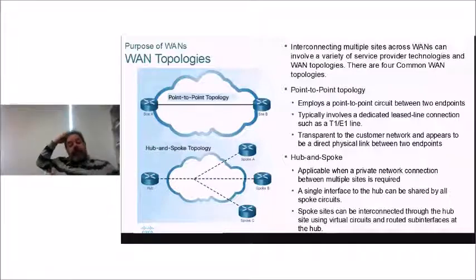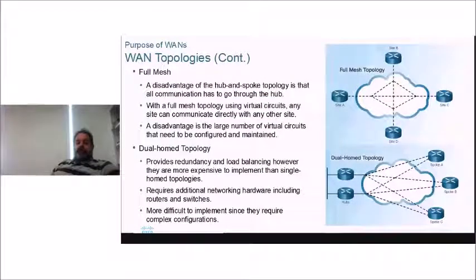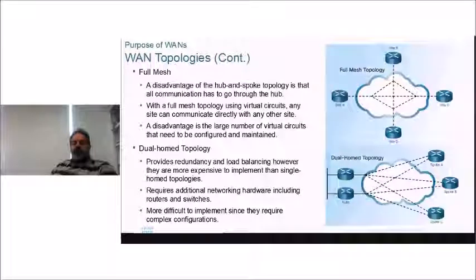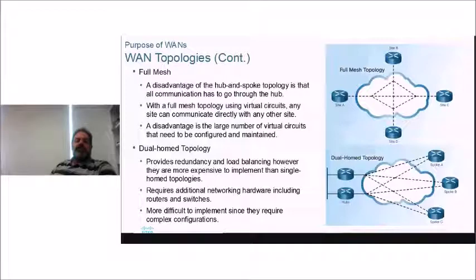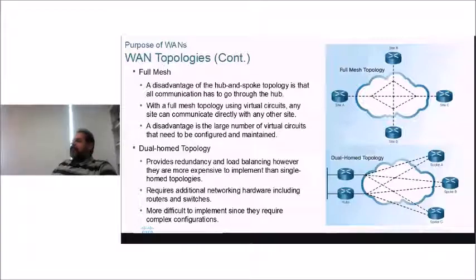Hub and spoke is one possible topology — your hub is the central point with a link to all campus sites, but there's no redundancy. A full mesh means every site has a direct link to every other site, giving a lot of redundancy. The downside is you're paying a lot for that — it's all about dollars.